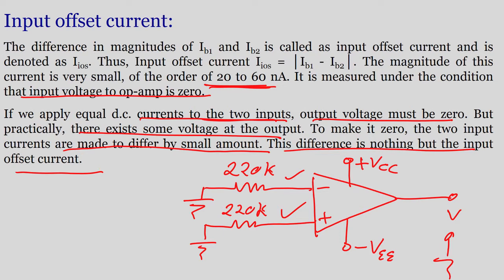When equal DC currents are applied to both the inverting and non-inverting inputs, the output VO should be zero — but in reality it is not. We can make it zero by deferring the input current by a small amount. This is how we balance the operational amplifier, and it is very important to balance your op-amp before working on different circuits.